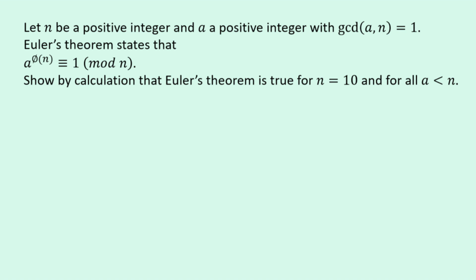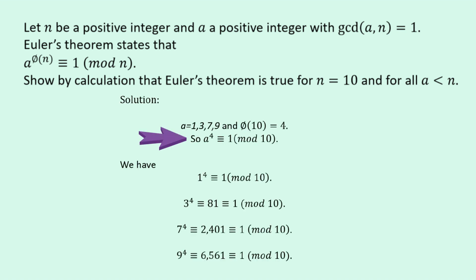So Euler is now telling us that if we take any of the numbers a equals 1, 3, 7, or 9, raise them to the power 4, then it will be equivalent to 1 modulo 10. In other words, the remainder when we divide it by 10 will equal 1. So let's go through it quickly.